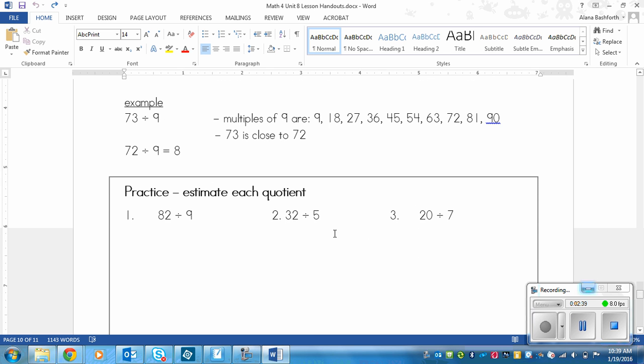Here's another example. So if I wanted to do 73 divided by 9, I would think of the multiples of 9. I could look at a multiplication chart or I could write them up. So I've got 9, 18, 27, 36, 45, 54, 63, 72, 81, 90. And my number is 73.